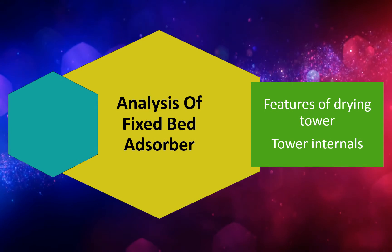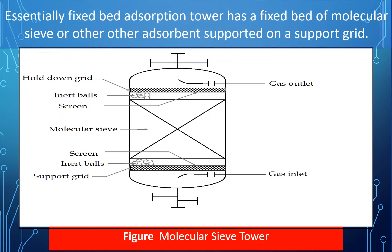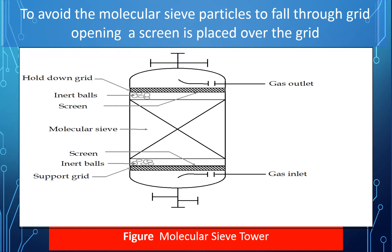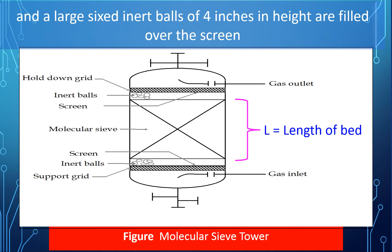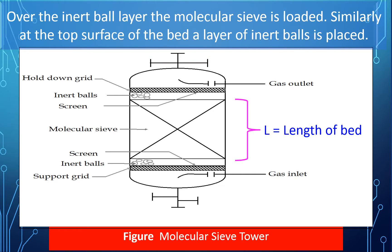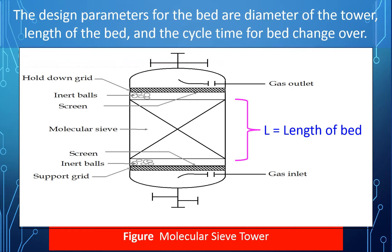Features of drying tower and tower internals. Essentially, a fixed-bed adsorption tower has a fixed-bed of molecular sieve or other adsorbent supported on a grid plate. To avoid the molecular sieve particles falling through the grid opening, a screen is placed over the grid and large-sized inert balls of 4 inches in height are filled over the screen. Over the inert ball layer, the molecular sieve is loaded. Similarly, at the top surface of the bed, a layer of inert ball is placed. To restrain the movement of the bed, a hold-down grid with a screen is fixed at the top. The design parameters for the bed are the diameter of the tower, the length of the bed, and the cycle time for bed changeover.